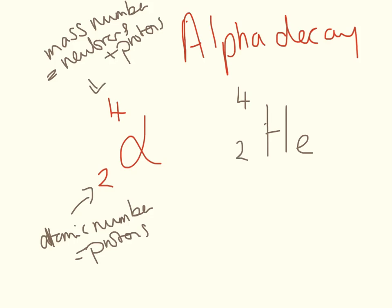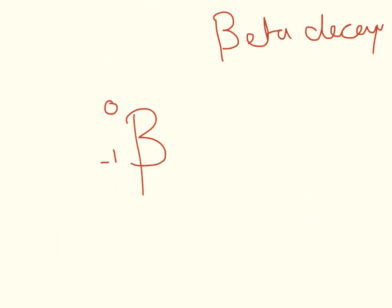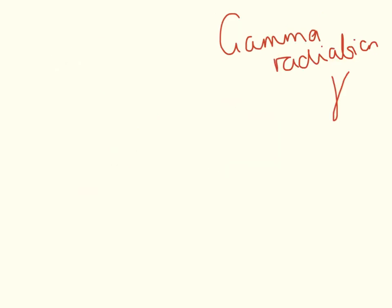An alpha particle is just a helium nucleus so there are no electrons, just the protons and the neutrons. Beta decay again, this is the number of protons, none, and this is the mass, none. A beta particle is better known as an electron. The third type of radiation is gamma radiation and that is just a wave. It has no maths and we're not using it in this video.